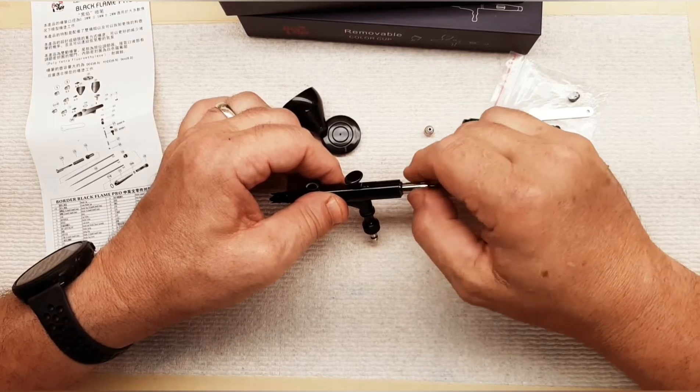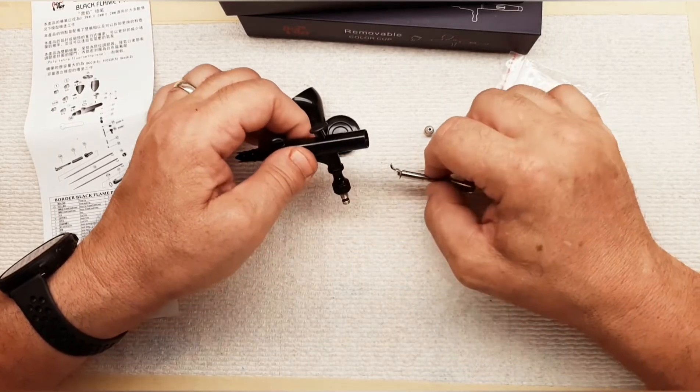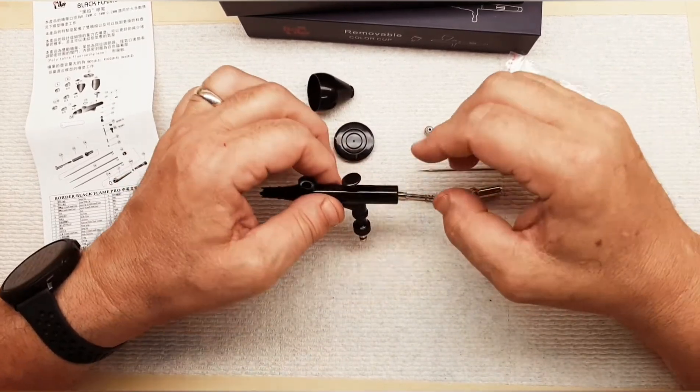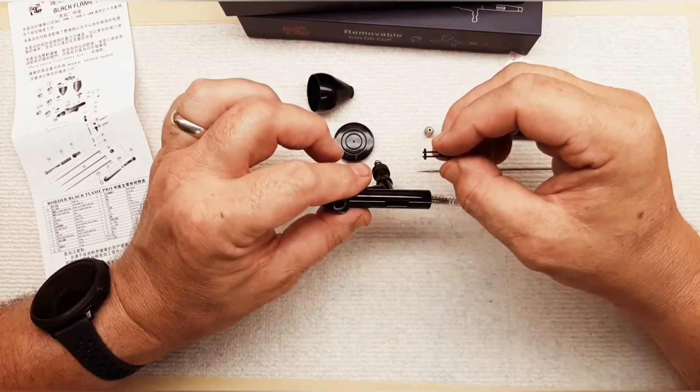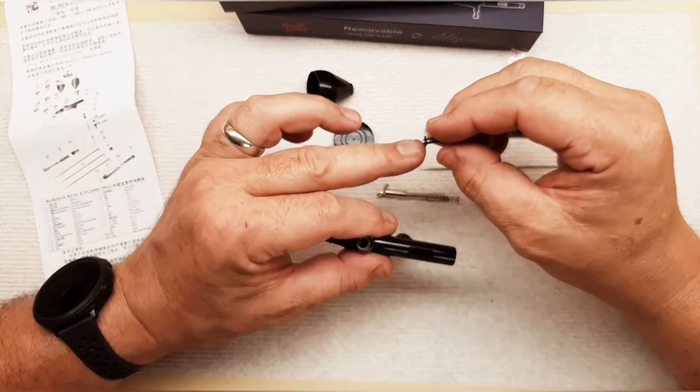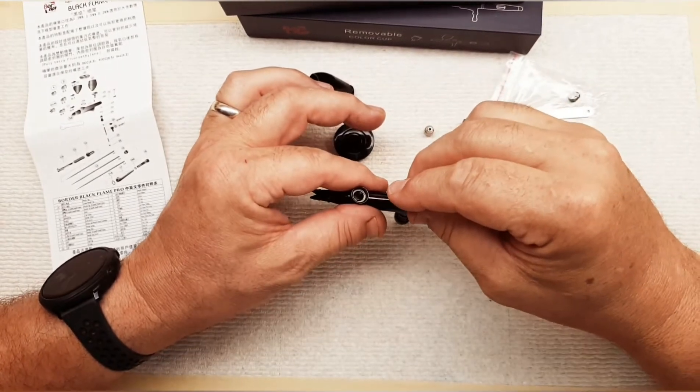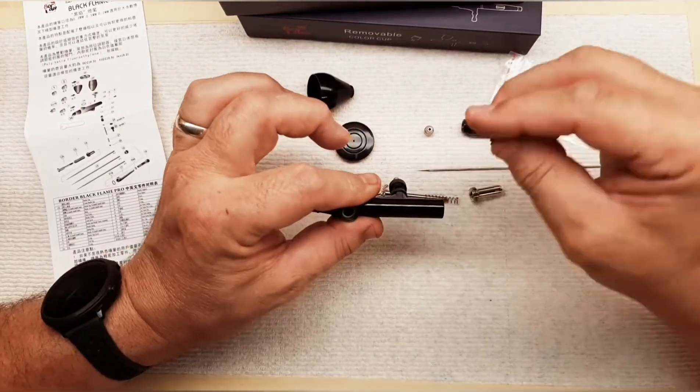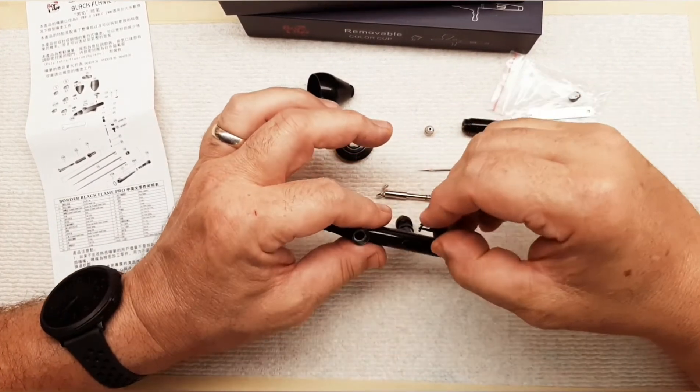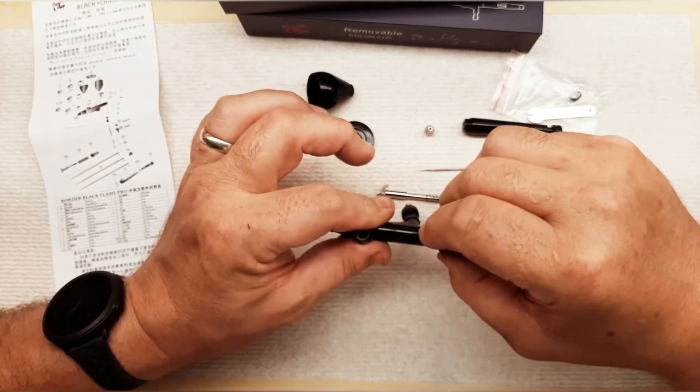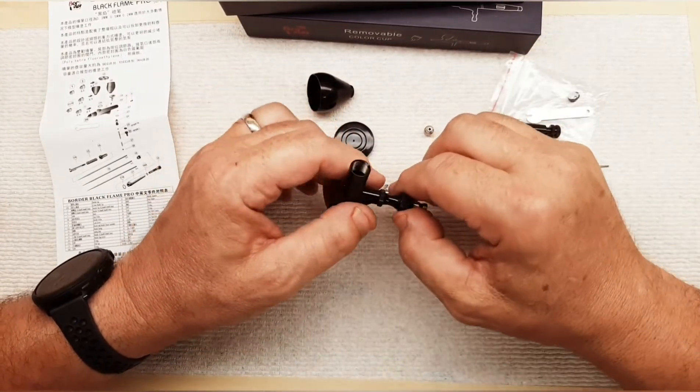This comes apart just like an Iwata as far as unscrewing it. They look very similar, although I tried comparing them, they're not interchangeable. You've got your spring there and there. What I like about this company's airbrush is this aspect. In an Iwata, you have a large little pin that you have to align and go straight down in, that goes down into the valve here. This has this little device, and you just have to set that on the little connection point down there, which is a lot easier. As I'm getting older, I've noticed that.